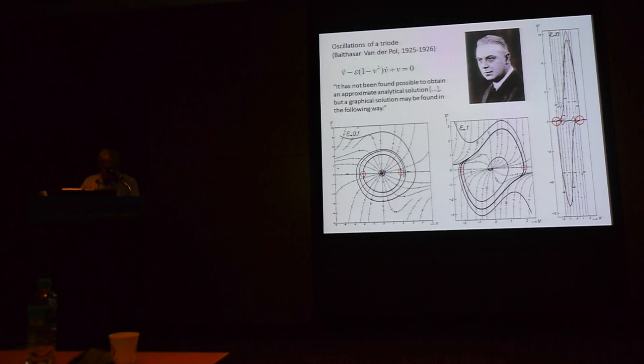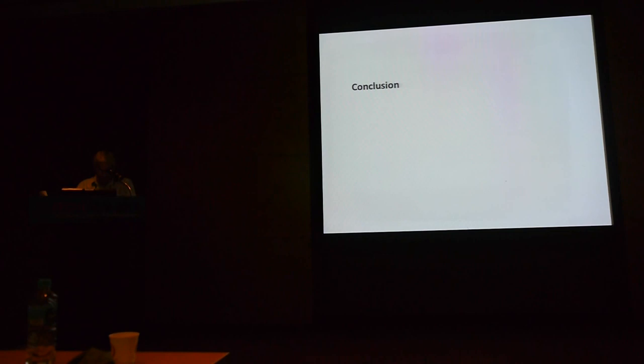Following Massau's ideas, the Dutch physicist Balthasar van der Pol used the technique of isoclines to graphically integrate the famous equation he found to describe the electrical oscillations of a triode. His calculations have constituted a new important step in the constitution of the theory of dynamical systems.